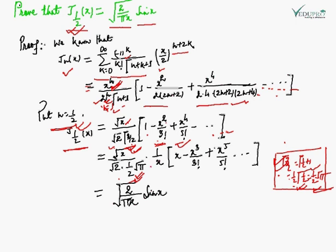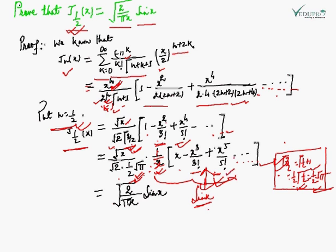So we have √x / (√2 · (√π/2)) times (1/x) · [x - x³/3! + x⁵/5! - ...], where we have multiplied and divided by x. Finally we get √(2/πx) · sin(x), since [x - x³/3! + x⁵/5! - ...] is the expansion of sin(x). So this is proved: J_{1/2}(x) = √(2/πx) · sin(x).